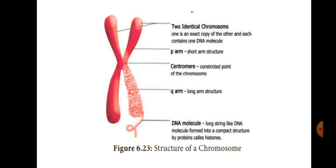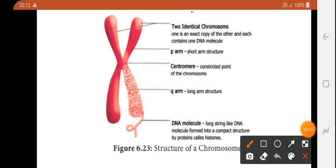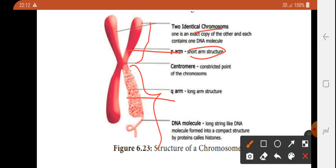Now we will look at Chromosomes. A chromosome contains two identical chromatids, each containing one DNA molecule. The upper arm is called the P arm (short arm) and the lower arm is called the Q arm (long arm). The center point is the Centromere, also called the primary constriction, which is a constriction point on the DNA molecule.